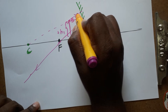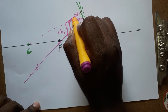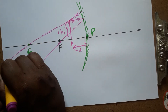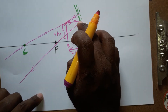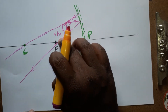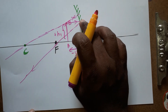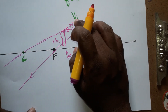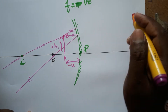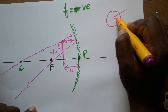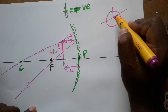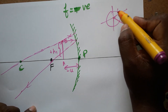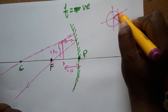The second rule: a ray which passes from the center of curvature will reflect back at the same angle, because the center of curvature acts as a normal to the mirror. So any line drawn from the center of curvature is normal to the mirror, and the ray reflects back in the same path.